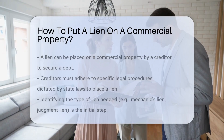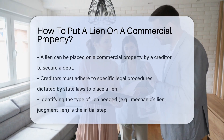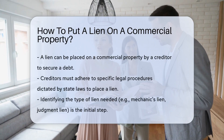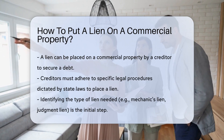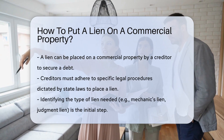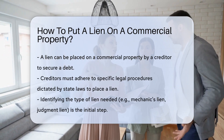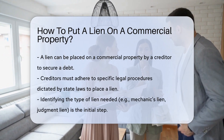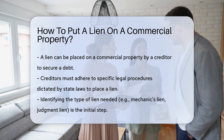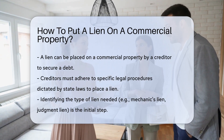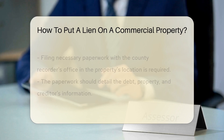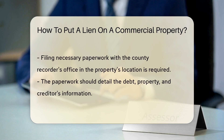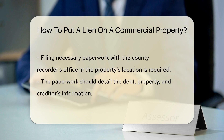A lien on a commercial property can be placed by a creditor to secure a debt owed by the property owner. And to put a lien, the creditor must follow specific legal procedures outlined by state laws. The first step is to determine the type of lien applicable to the situation, such as a mechanics lien or a judgment lien.